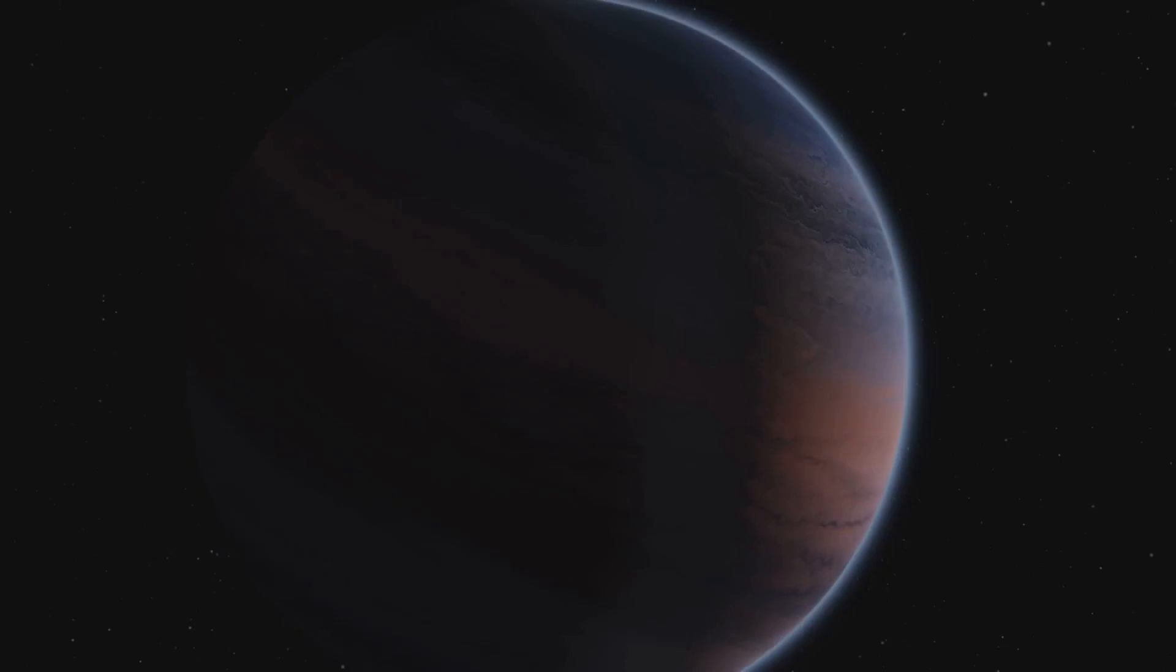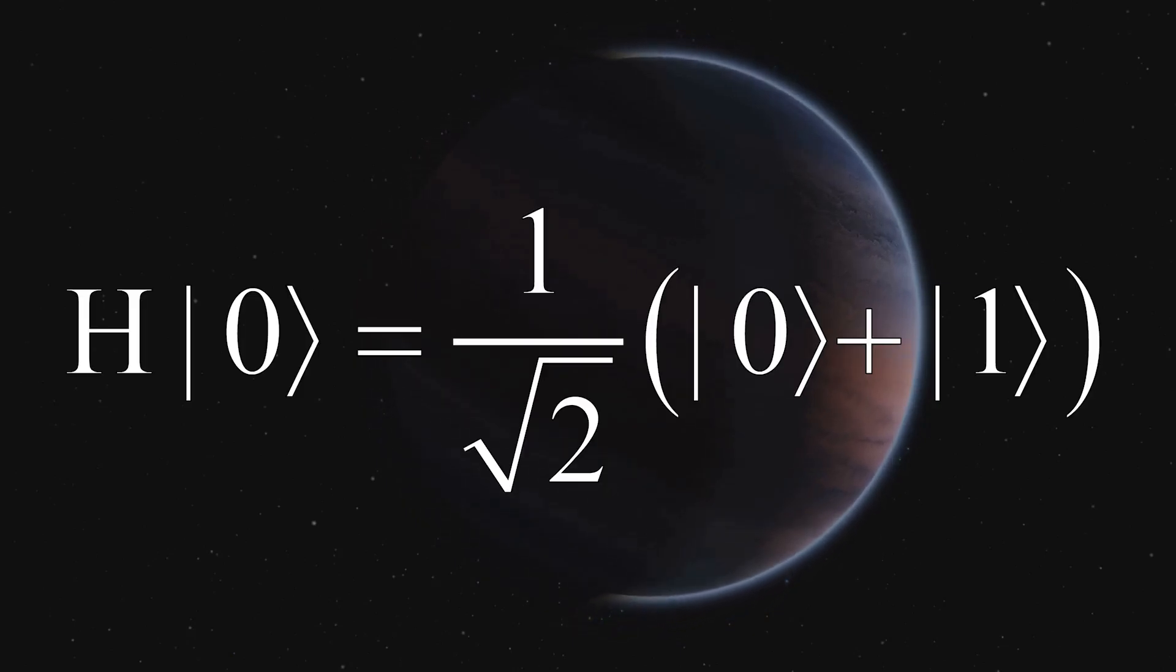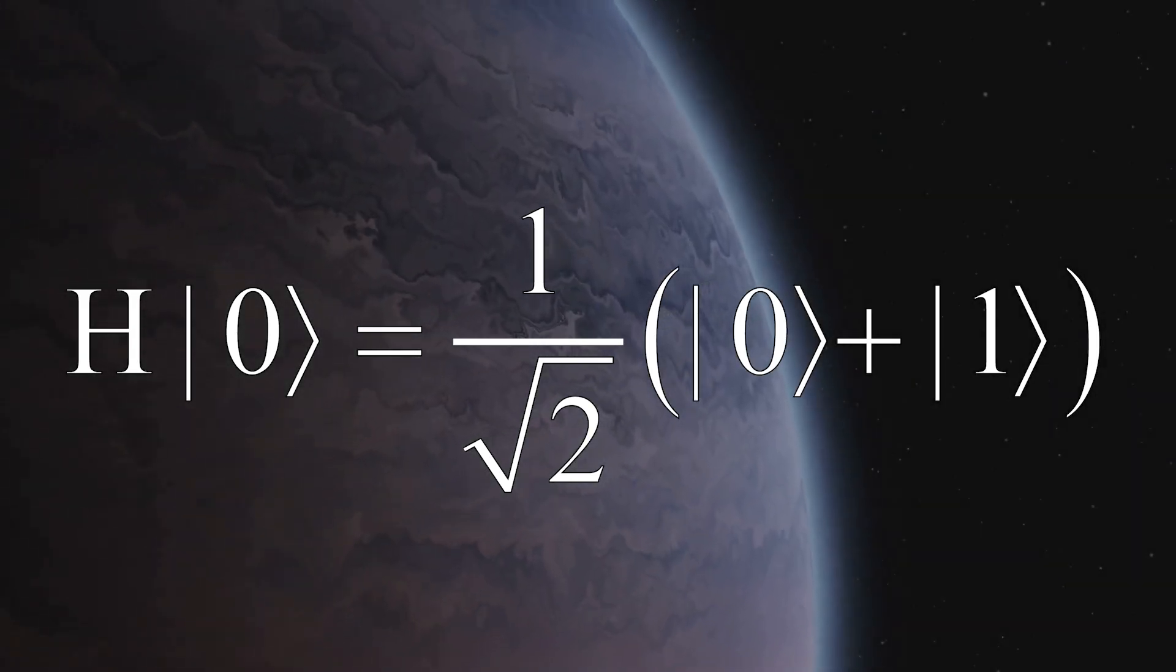Number one: Superposition in logic. A classical bit is either zero or one, but a qubit can be both at the same time. This allows quantum computers to process multiple possibilities simultaneously, which can provide an exponential speedup in certain problems. For example, applying a Hadamard gate to |0⟩ yields 1/√2 times the sum of |0⟩ + |1⟩, making it equally probable to measure zero or one. This principle underlies many quantum algorithms like Grover's search, which can find a desired item in an unordered list faster than any classical approach.